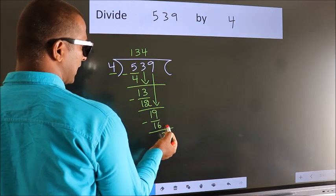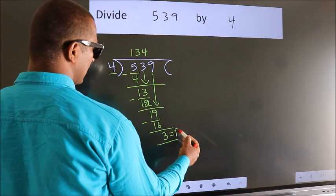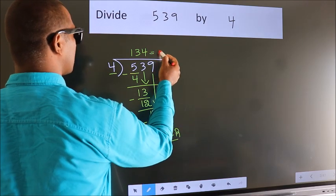No more numbers to bring down. So we stop here. This is our remainder. This is our quotient, 134.